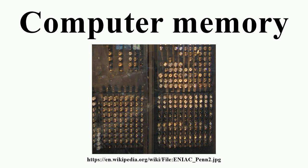Virtual memory is a system where all physical memory is controlled by the operating system. When a program needs memory, it requests it from the operating system, which then decides what physical location to place the memory in. This offers several advantages: computer programmers no longer need to worry about where the memory is physically stored or whether the user's computer will have enough memory. It also allows multiple types of memory to be used; for example, some memory can be stored in physical RAM chips while other memory is stored on a hard drive. The operating system will place actively used memory in physical RAM, which is much faster than hard disks. When the amount of RAM is not sufficient to run all the current programs, it can result in a situation where the computer spends more time moving memory from RAM to disk and back than accomplishing tasks. This is known as thrashing.